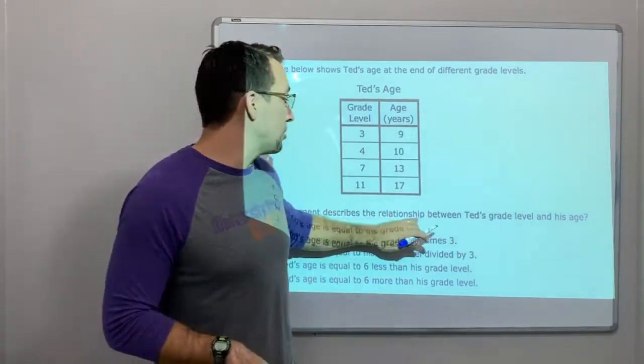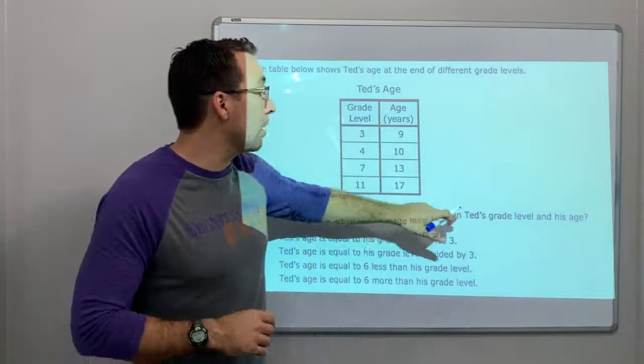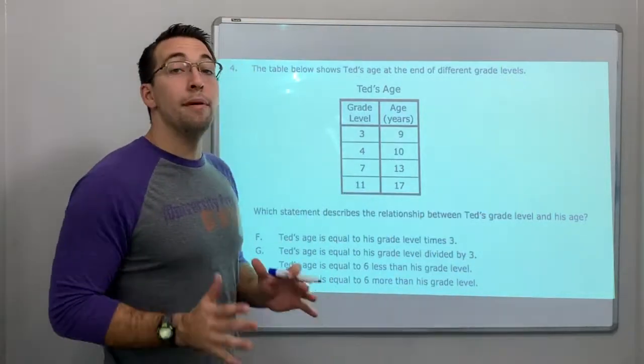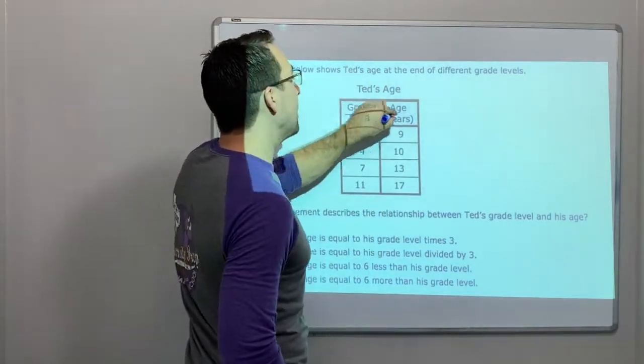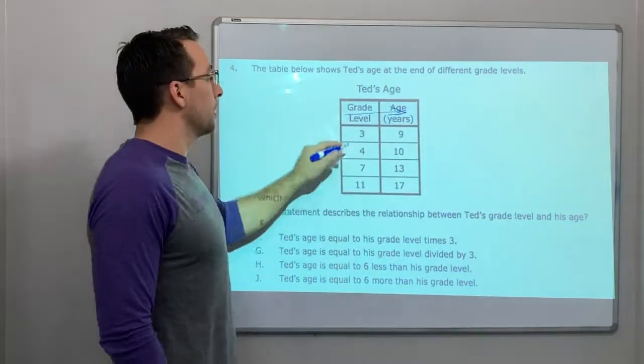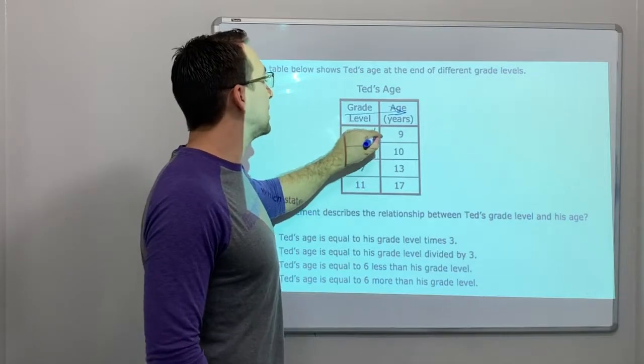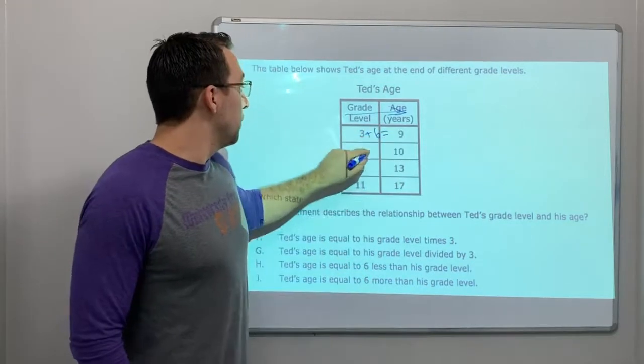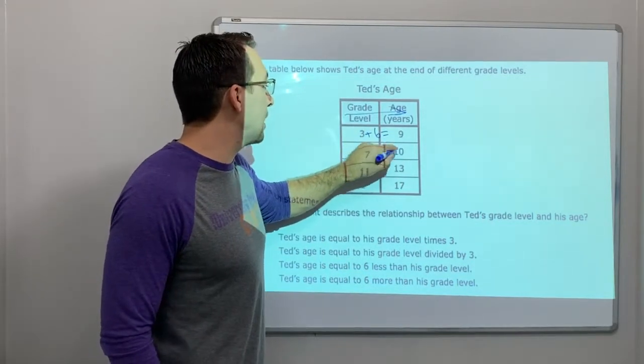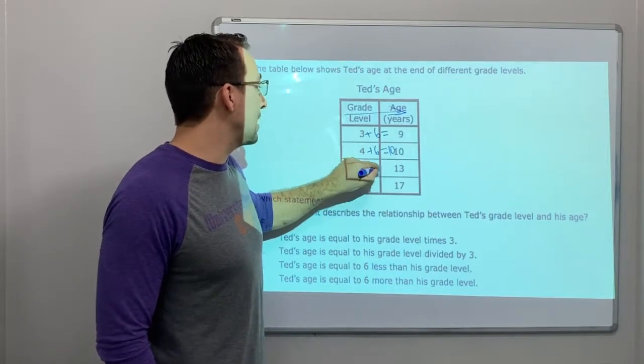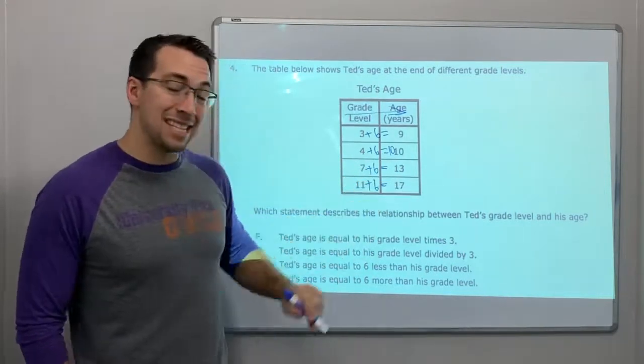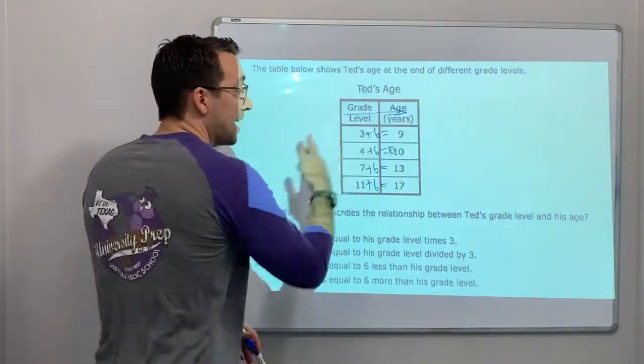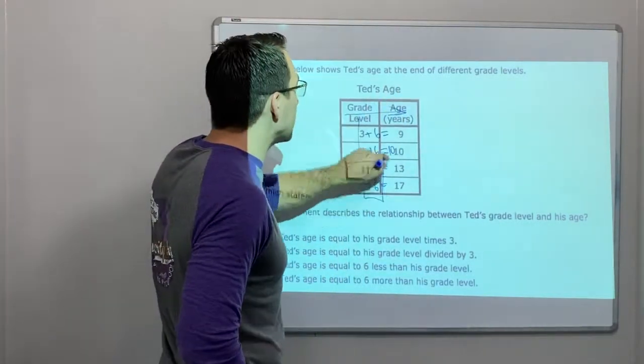Which statement describes the relationship between Ted's grade level and his age? Remember we're trying to find the pattern between X and Y. So we're trying to find this pattern: 3 plus 6 equals 9, 4 plus 6 equals 10, 7 plus 6 equals 13, 11 plus 6 equals 17. That is a consistent pattern. Our pattern is plus 6.